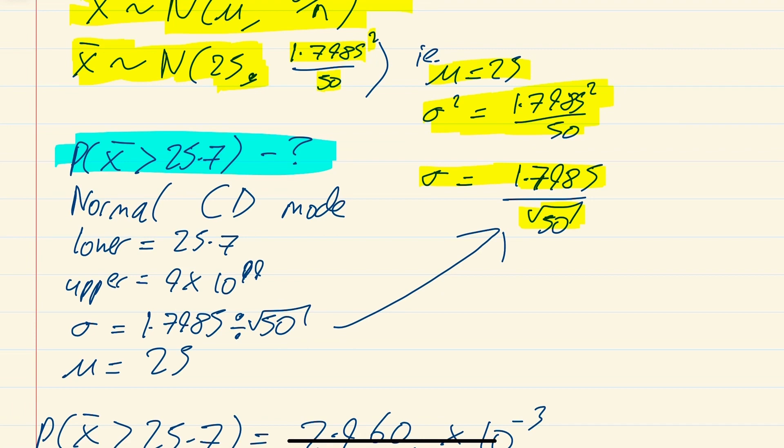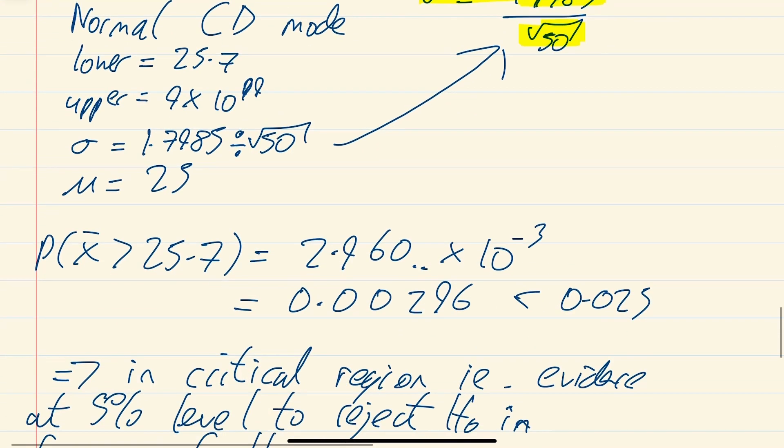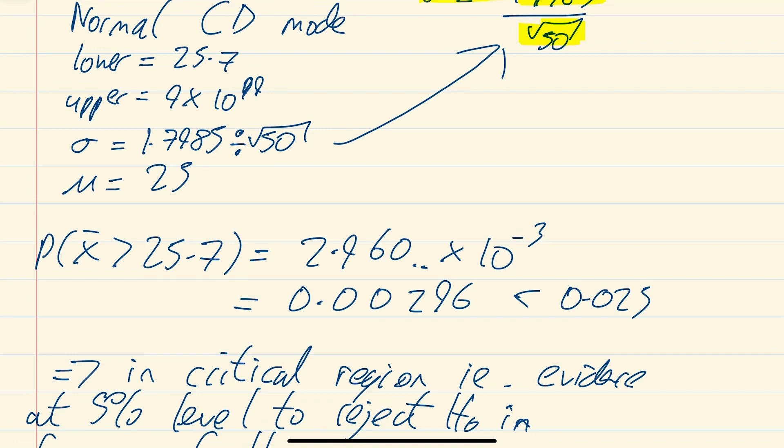Let's go through how we do that. Hit mode, and then on the Casio ClassWiz, you hit 7, and that's the distributions. Hit 7, and then you go to normal CD. Then your lower, you put in 25.7, your upper, do 9 times 10 to the 99, your sigma, just punch in 1.7985 divided by the square root of 50, and then your mu, put in 25, and then press equals. What I got was 2.960 times 10 to the minus 3. Write that as a decimal, 0.00296. And that is 0.296 of a percent.